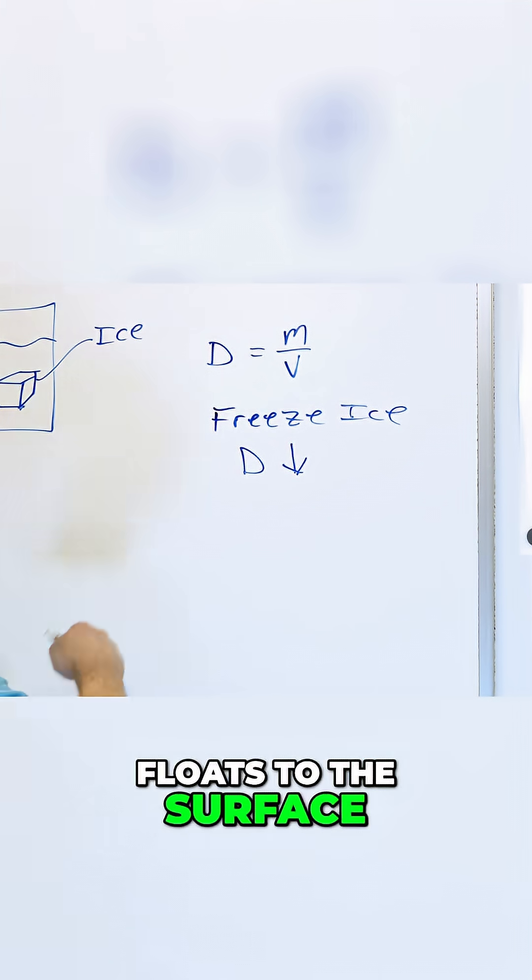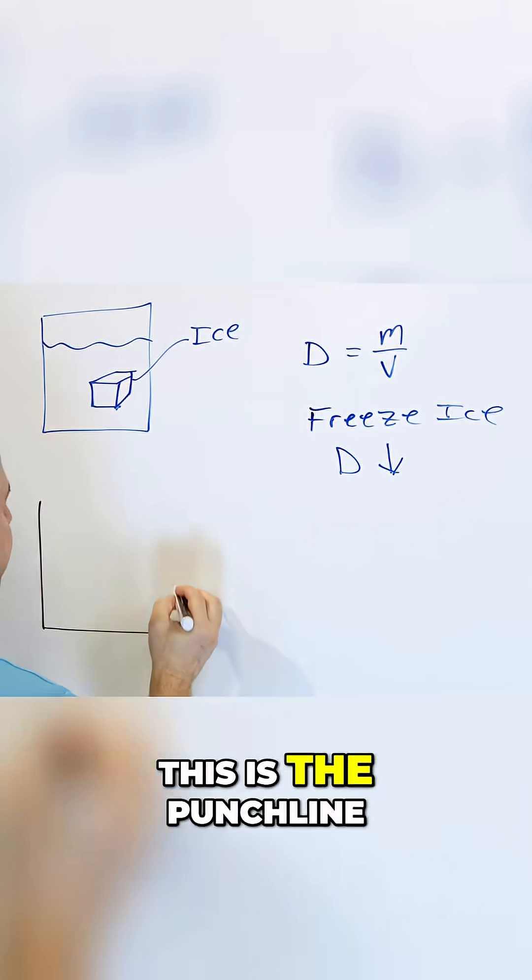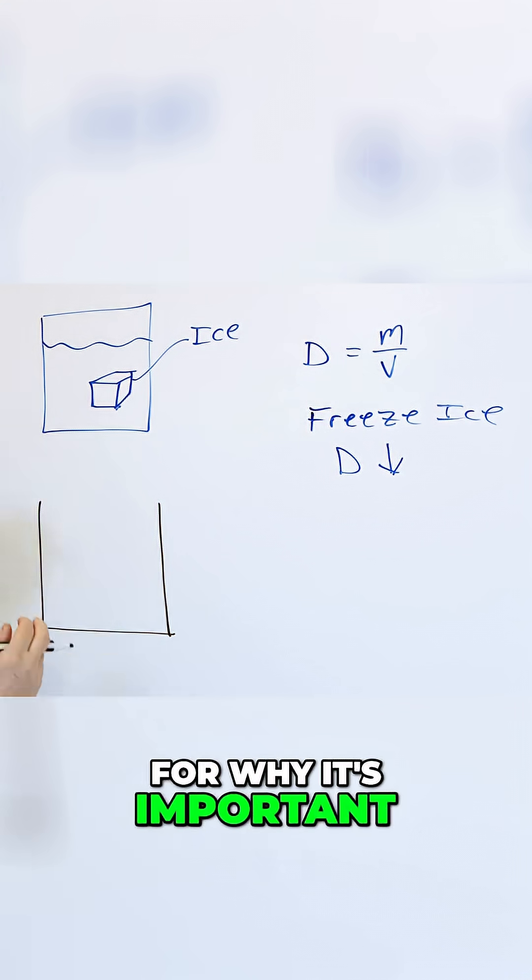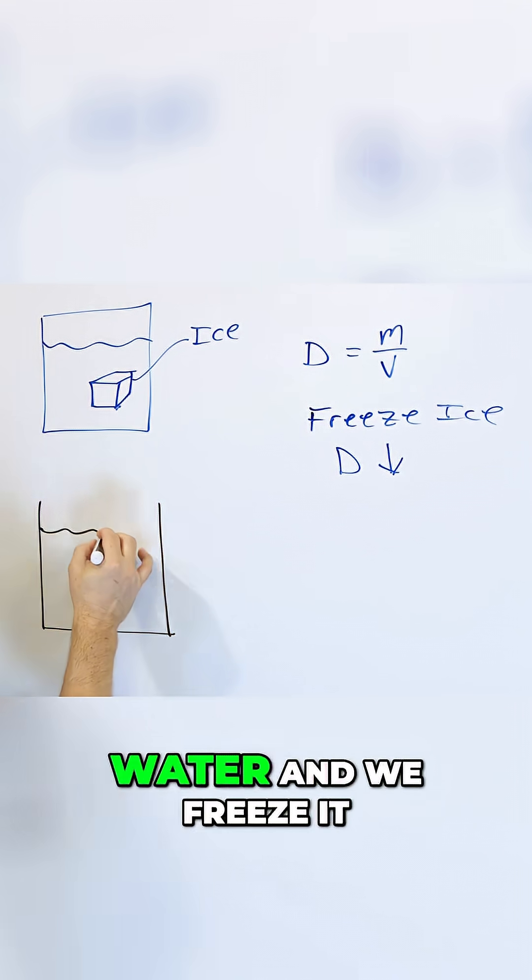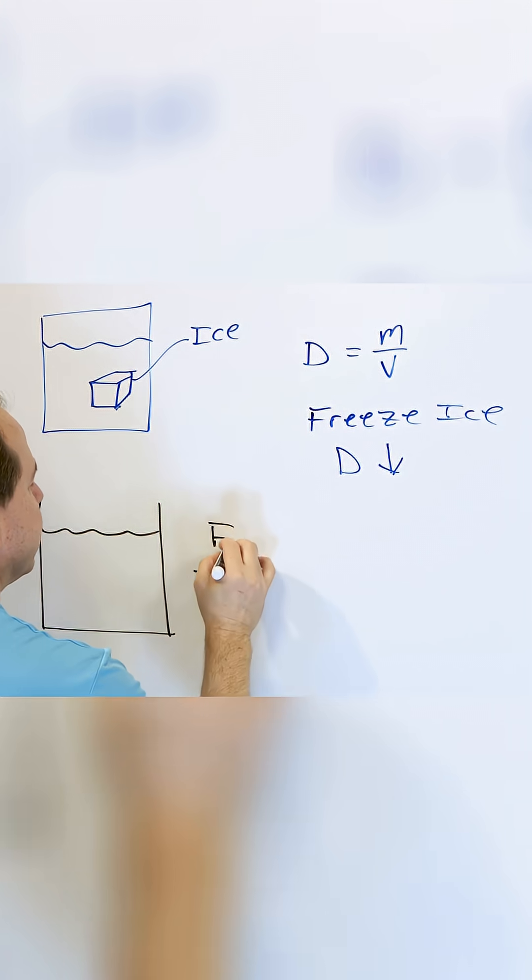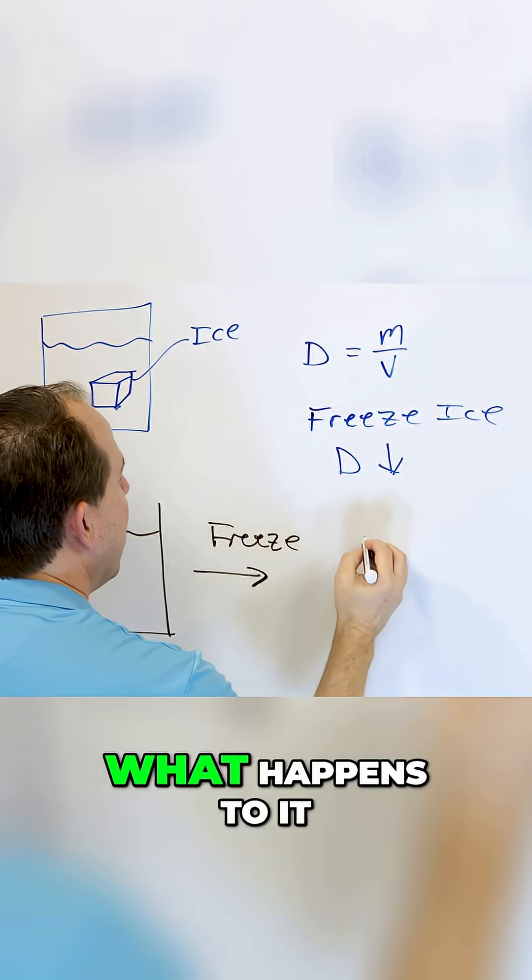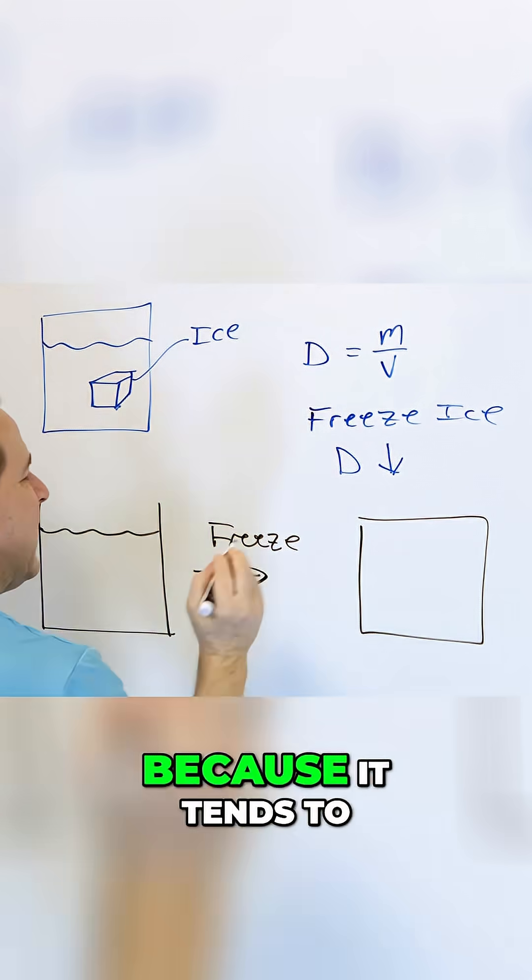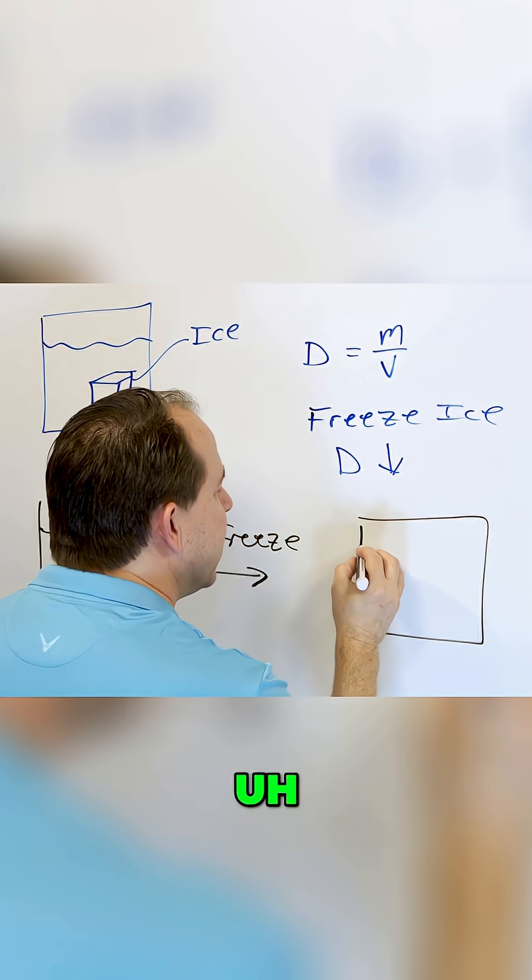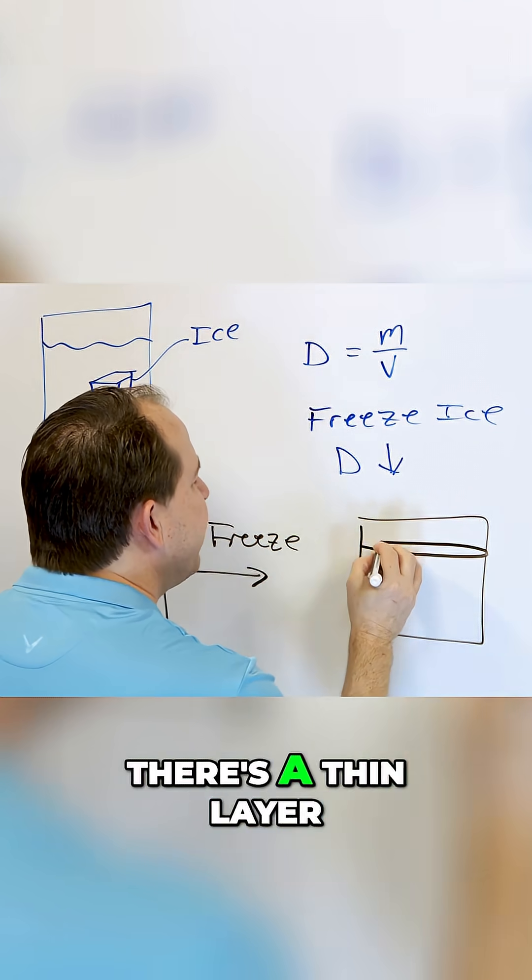Now what happens? This is the punch line for why it's important. When we take liquid water and we freeze it, what happens to it? Well, because it tends to float whenever it freezes, there's a thin layer on the top.